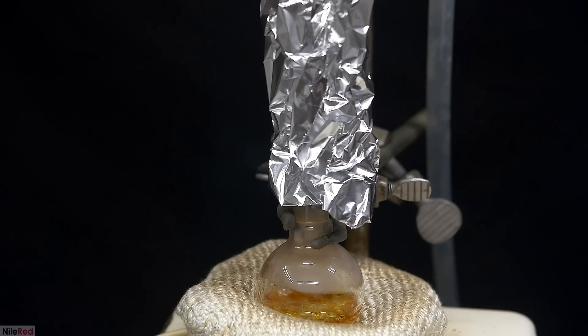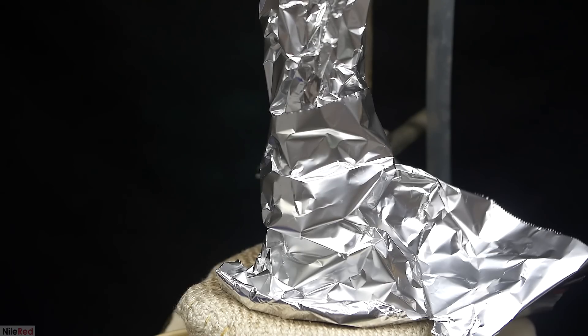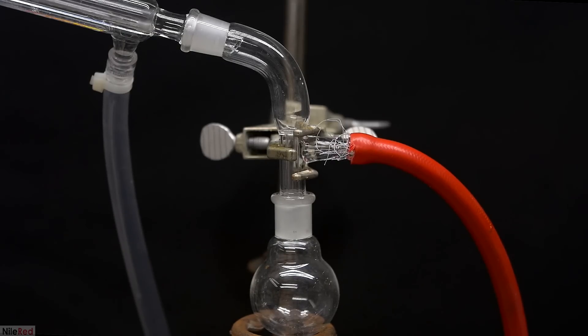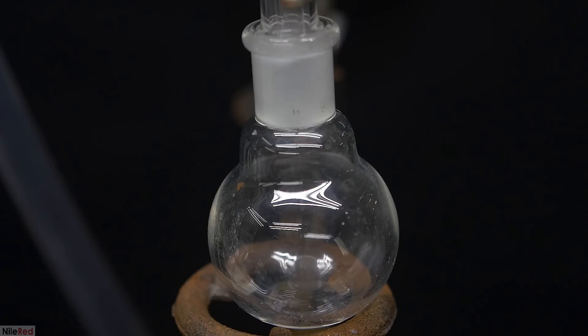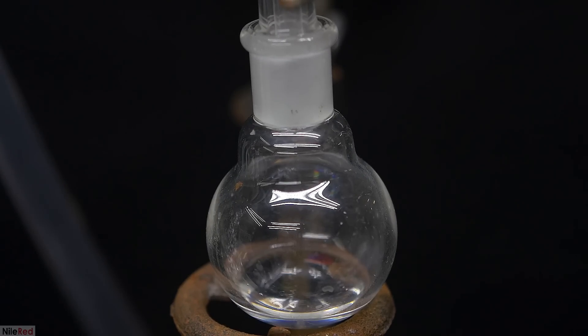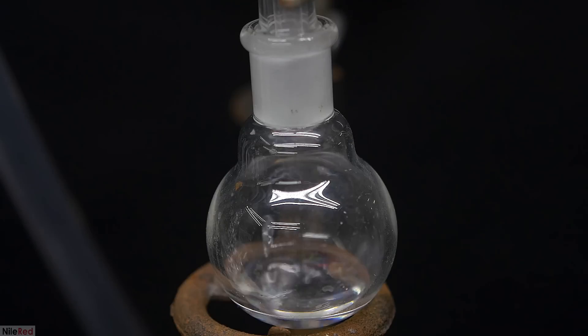When distilling things like benzaldehyde, it's extremely important to use vacuum because we have to get rid of any oxygen present in the apparatus. If there's any oxygen present, it will react with the benzaldehyde to form benzoic acid, which is pretty undesirable. The boiling point of benzaldehyde is lower than cinnamaldehyde, so the first fraction that comes over will be the benzaldehyde. We keep collecting the benzaldehyde until eventually it stops coming over and the temperature on the thermometer starts to increase.